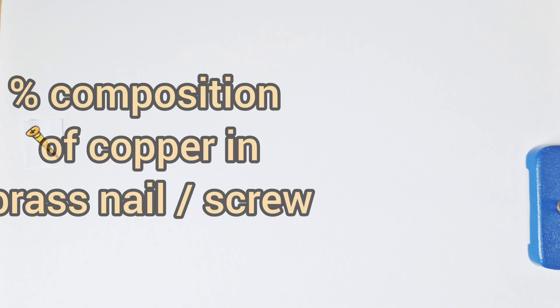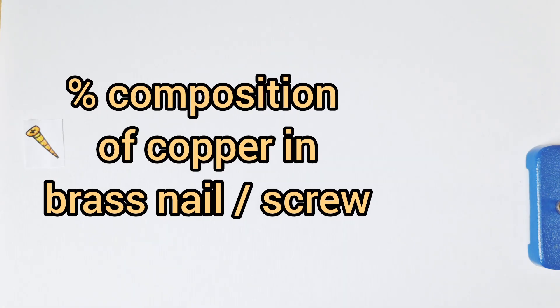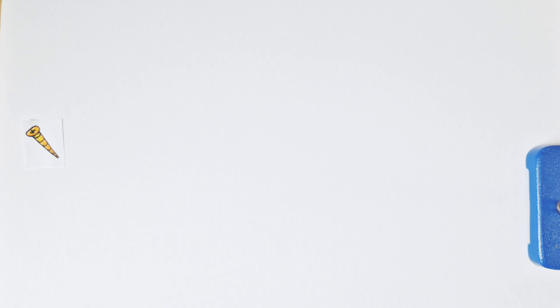Hi there, in this video we're going to look at the percentage composition of copper in a brass nail via a titration experiment. We'll go through the nature of the experiment itself, the calculation and how to solve it.